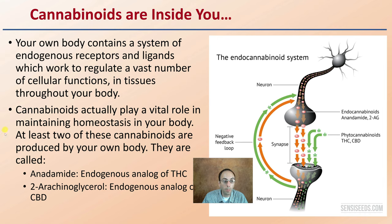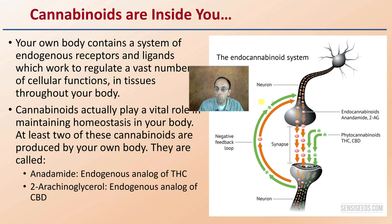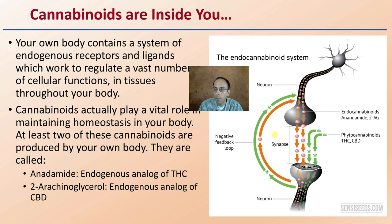At least two cannabinoids are produced in your own body. We have our neurons, our receptors, and chemical signals being released. The synapse is the gap between the neurons — a physical space where signals travel and are received, inducing a response.